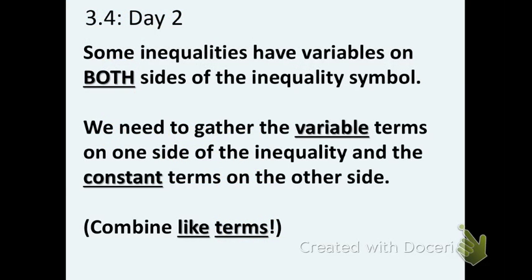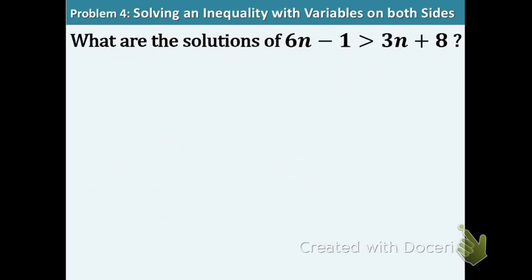In 3.4 Day 2's material, we're going to focus on when we have a variable on both sides of the inequality. So let's get started. Some inequalities have variables on both sides of the symbol. We need to gather the variable terms on one side and the constant terms on the other. So essentially we're just combining like terms, which is what we've been doing a lot.